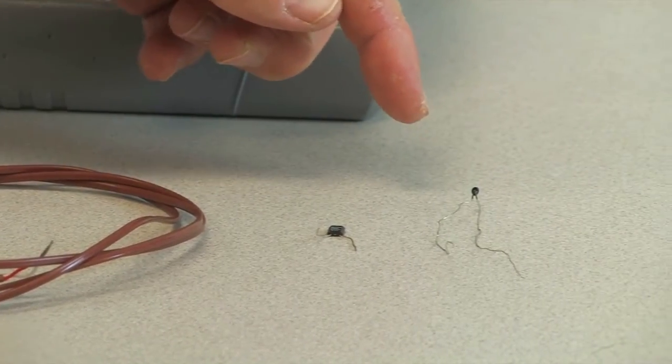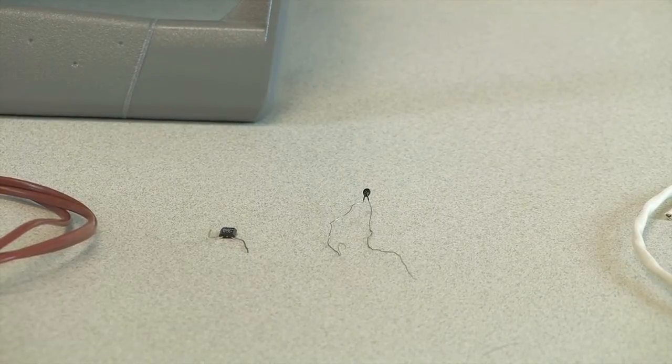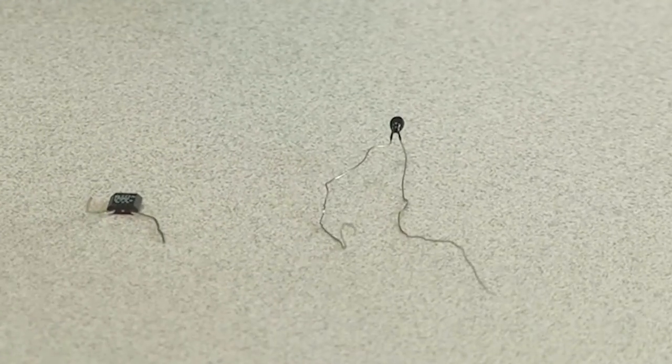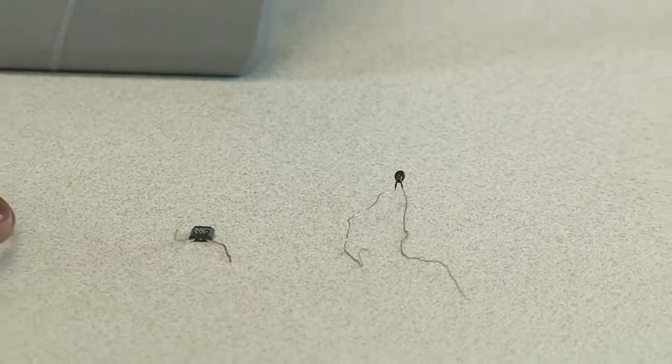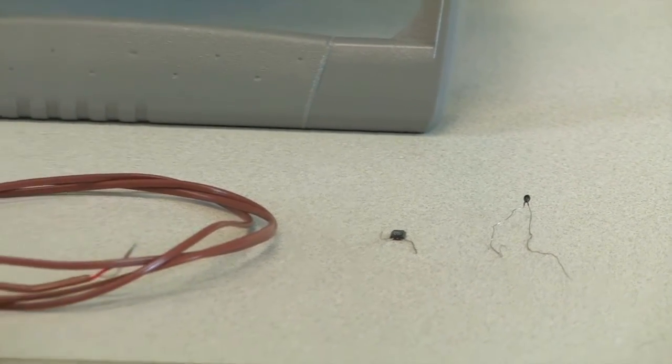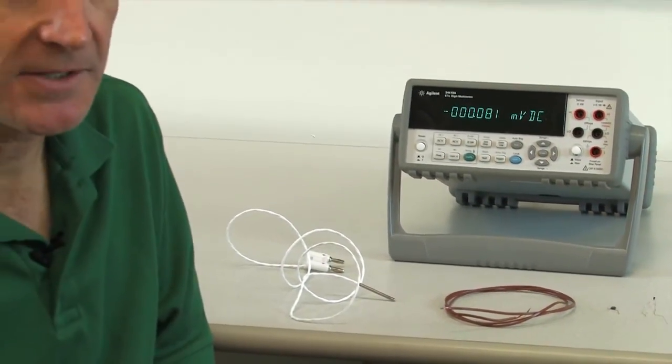A better choice is the RTD or thermistor. Both the RTD and thermistor are resistive devices that change their resistance based on temperature. The RTD is known for being a bit more accurate, it has a larger temperature range, and is a little bit more expensive than the thermistor.